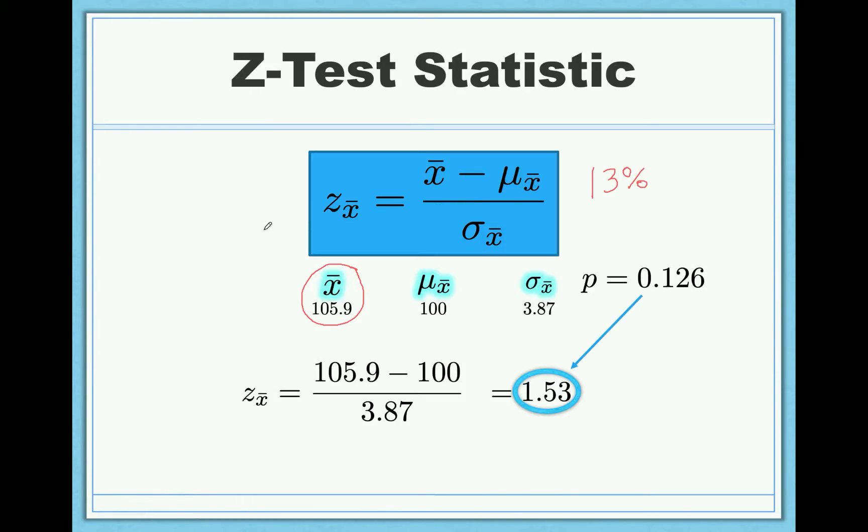Said differently, even if neuro IQ is totally ineffective and has no bearing whatsoever on people's IQ scores, we would expect to find something this extreme, a sample mean of 105.9, which is a little bit different than a population mean of 100, we would expect to find that about 13% of the time.